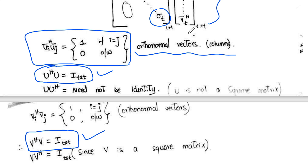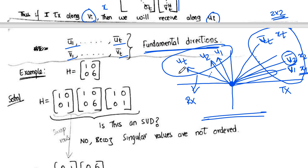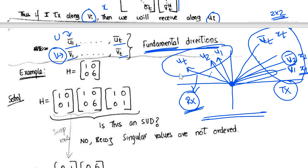When we decompose the matrix using SVD, the columns of the V matrix form the fundamental directions on the transmitter side and the columns of the U matrix form the fundamental directions on the receiver side. Since we are performing beamforming by taking the columns of V, this is called transmit beamforming. At the receiver side, columns of U are used as beamforming weights, so it is called receiver beamforming.